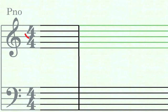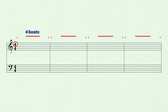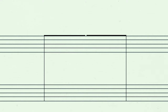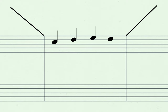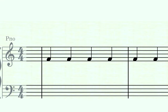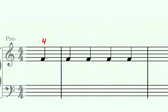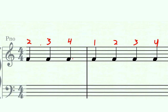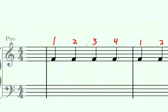If the top number is a four, that means we can fit four beats into each of these boxes. For each of these boxes, you're going to be counting up to four. And then when you get into a new measure, you're going to be counting from one to four again. So in a measure of four-four, you should always be counting one, two, three, four — then one, two, three, four again.